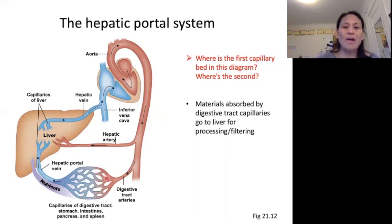So hopefully you figured out our first capillary bed is here in the digestive tract, mostly the small intestine but also other parts of the digestive tract. Second capillary bed, which is partly grayed out, is right here in the liver.